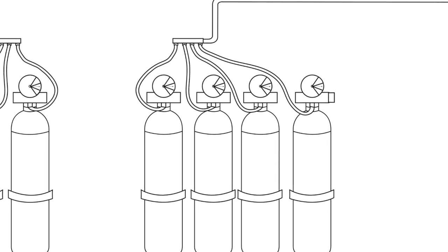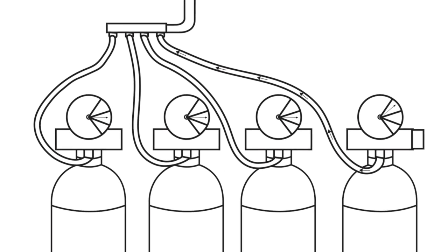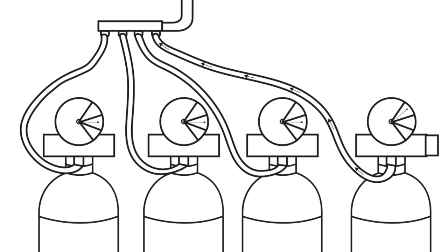When the solenoid activates in this scenario, the pressure travels from the activated valve up through the hose to the manifold, where all valves connected to the manifold activate.